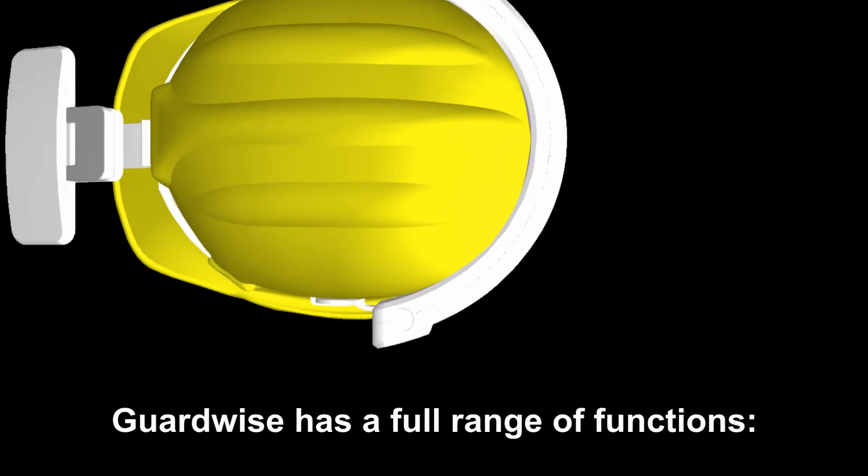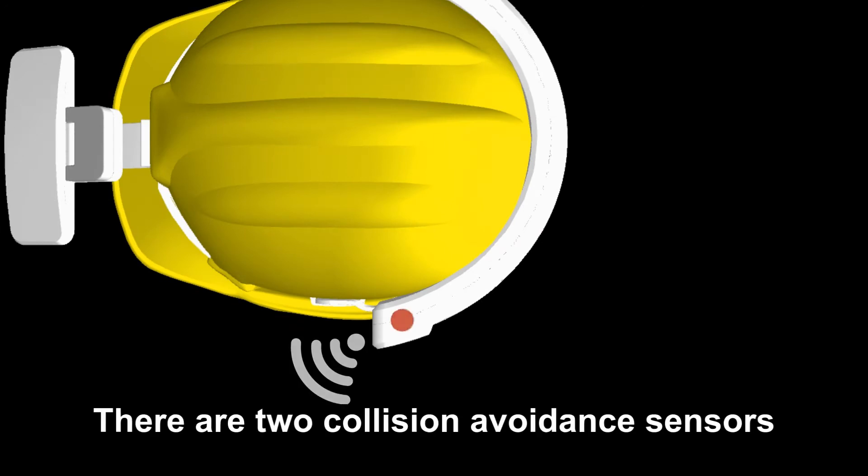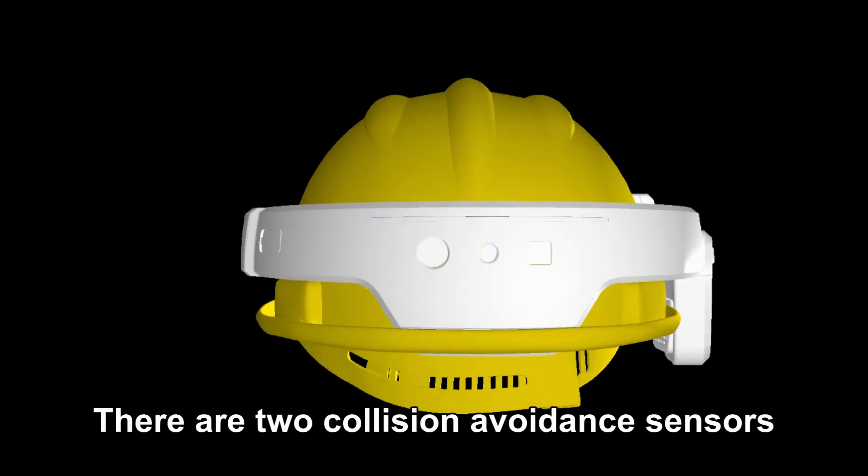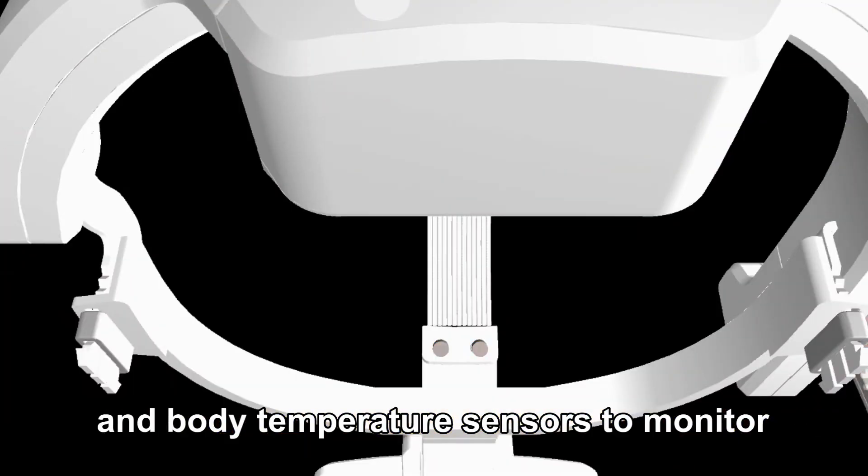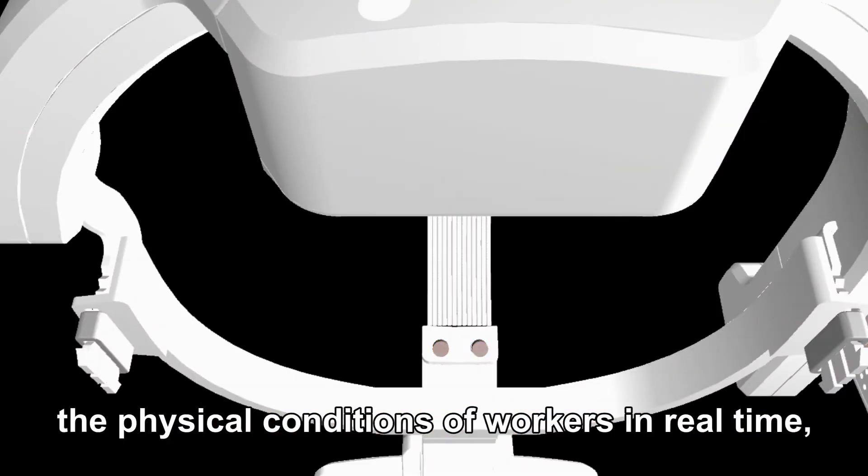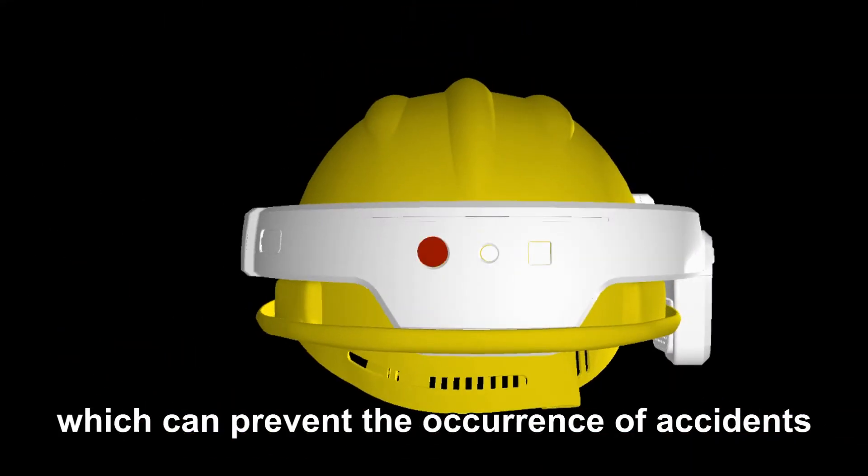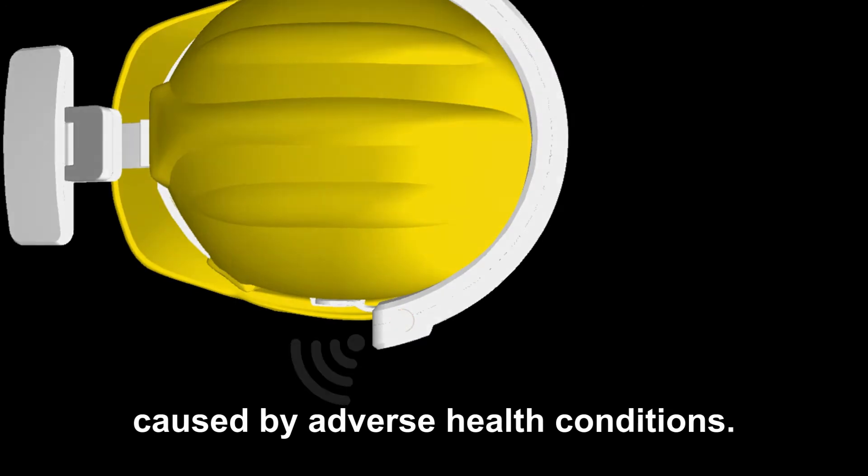GuardWise has a full range of functions. There are two collision avoidance sensors and heart rate, blood pressure, and body temperature sensors to monitor the physical conditions of workers in real time, which can prevent the occurrence of accidents caused by adverse health conditions.